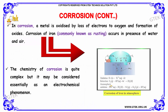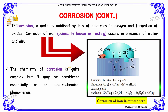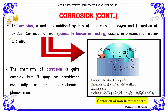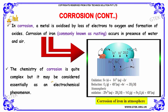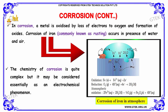In corrosion, a metal is oxidized by loss of electrons to oxygen and the formation of oxides. Corrosion of iron, commonly known as rusting, occurs in the presence of water and air. The chemistry of corrosion is quite complex but it may be considered essentially as an electrochemical phenomenon. You can find here how the corrosion of iron in terms of the atmosphere has been illustrated.